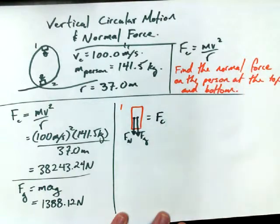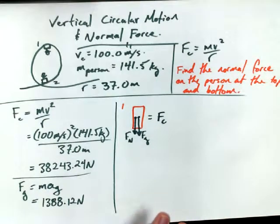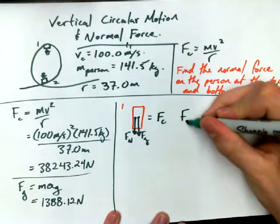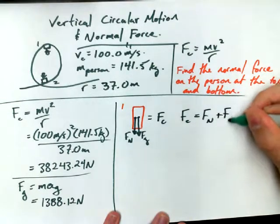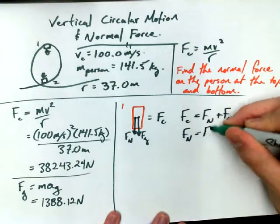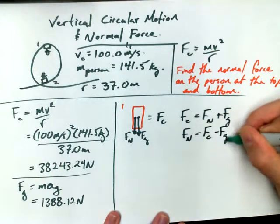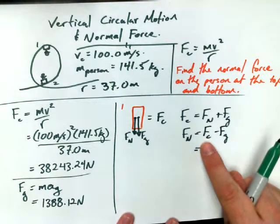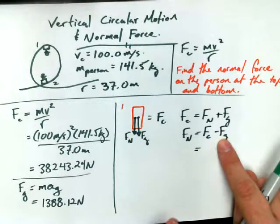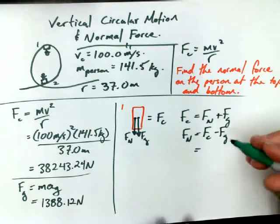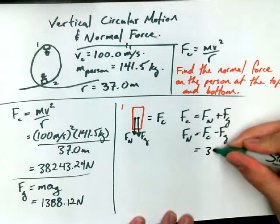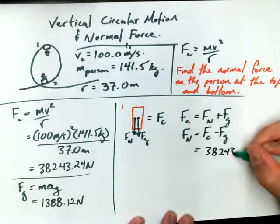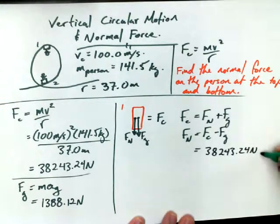So, this is equal to Fc. Because those are the only forces acting on this person in the vertical. And so Fc is equal to F normal plus Fg. And if we're looking for the normal force, we can rearrange that to get Fc minus Fg. And subbing in our values, because we've already calculated them. We could write this out as F normal equals mv squared over r minus mass times acceleration due to gravity. But we've already calculated it.